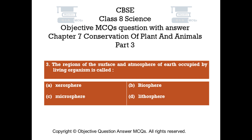Question number 3. The regions of the surface and atmosphere of Earth occupied by living organisms is called: Option A - Atmosphere. Option B - Biosphere. Option C - Microsphere. Option D - Lithosphere.